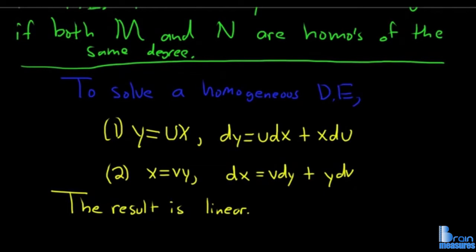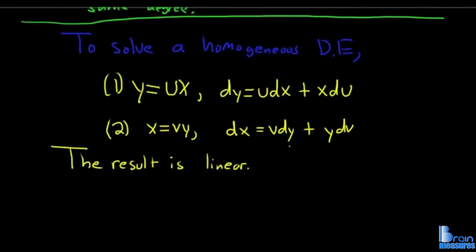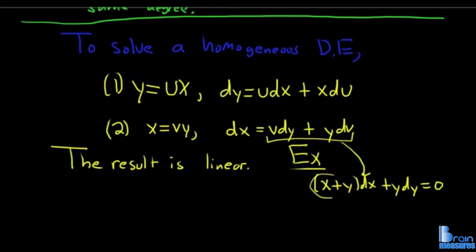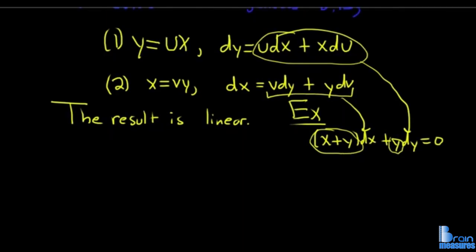After you do this, the result is separable. You want to use the one that's easiest. For example, say we had (x+y)dx + ydy = 0. If you use the second substitution you'd have to multiply and foil, whereas if you use the first one you just distribute the y, so it's easier. In this case the first one is the easier choice.